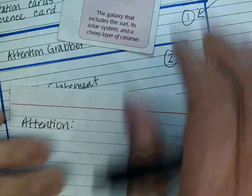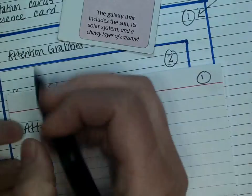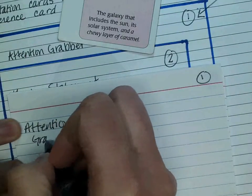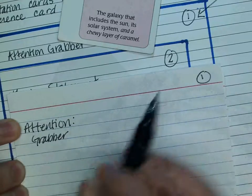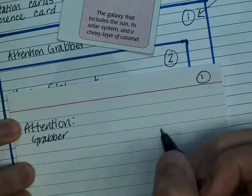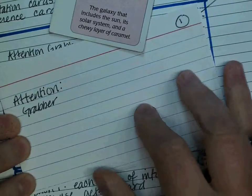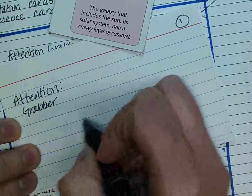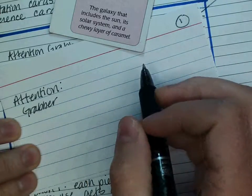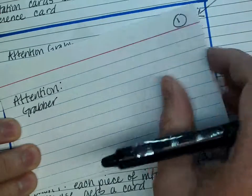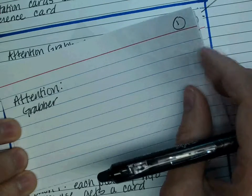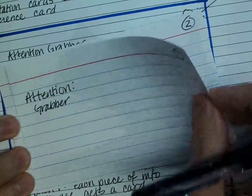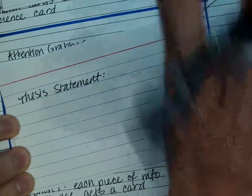Take your topic, whatever it is, and think of your attention grabber, just like you did previously, and get your attention grabber on that card. Usually what we do in this card method is you write it kind of in the middle of your card so it's really easy to see, and that makes it easier to write neatly.